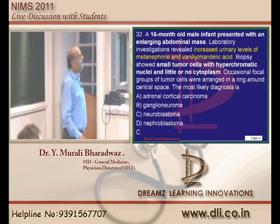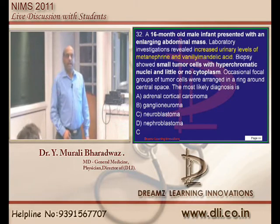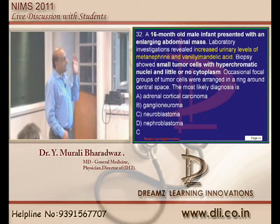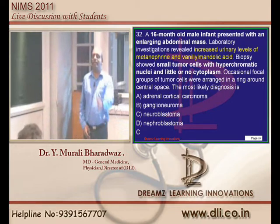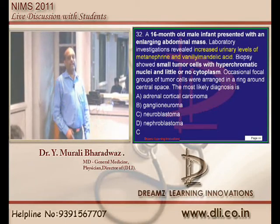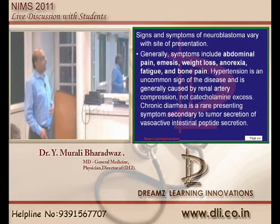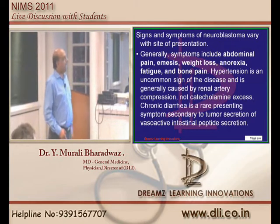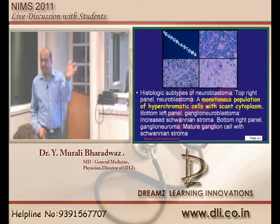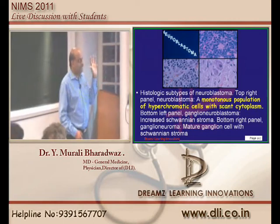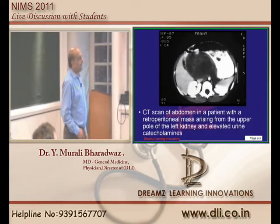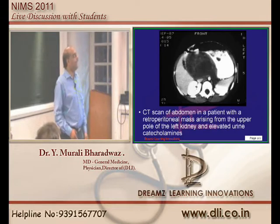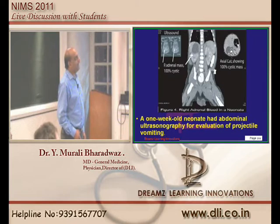A 16-month-old male infant with an enlarging abdominal mass, positive vanillylmandelic acid (VMA), and small tumor cells with hyperchromatic nuclei with little or no cytoplasm - classically this is a story of neuroblastoma, which presents with abdominal pain typically in this age group. A monotonous population of hyperchromatic cells with scant cytoplasm is what you come across in neuroblastoma. This is a typical CT abdomen showing a retroperitoneal mass at the upper pole of the kidney, which is neuroblastoma, and another example of right adrenal bleed in a neonate presenting as an adrenal mass.